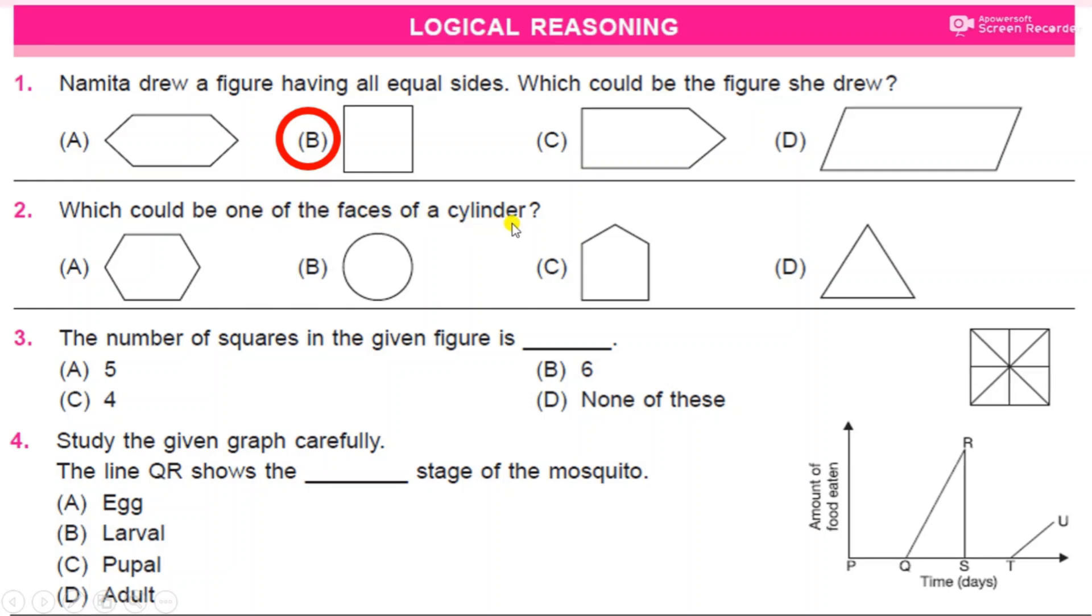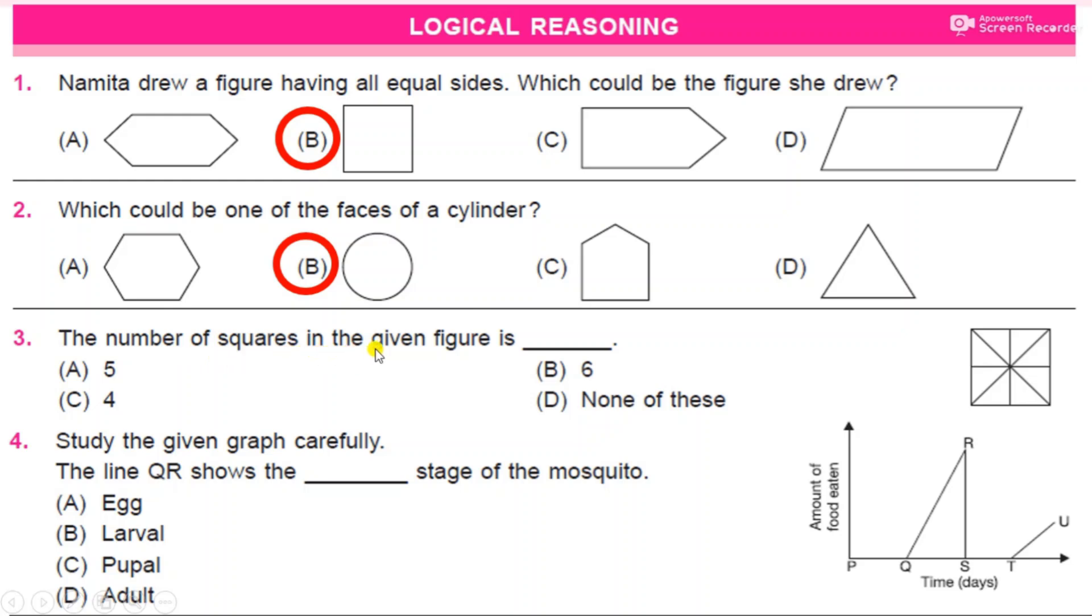Which could be one of the faces of a cylinder? Look at the options. You need to identify the faces of the cylinder. Which of the following figures can be a face of a cylinder? And the answer is B, circle.